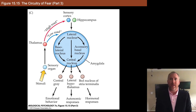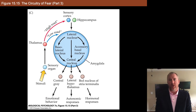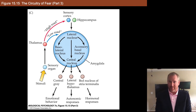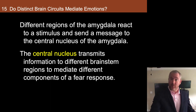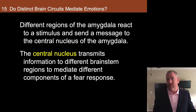All that information converges at the output nucleus — the central nucleus — and leaves the amygdala to one of three brain regions. Part of the information heads to the central gray, which is involved in the emotional response; other information goes to the lateral hypothalamus, which controls autonomic responses; and still others go to the bed nucleus of the stria terminalis, which influences the hormonal response. The central nucleus transmits information to different brainstem regions to mediate different components of the fear response.